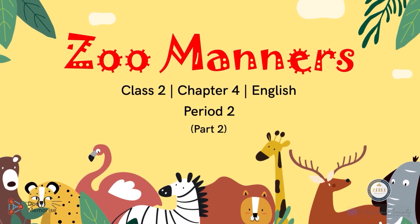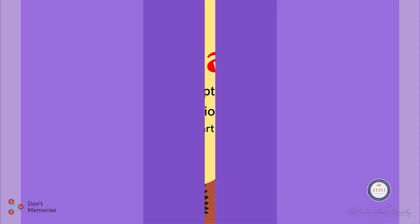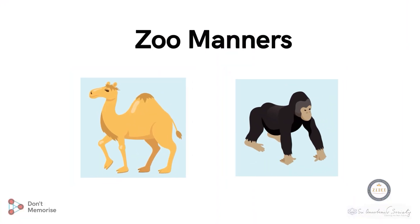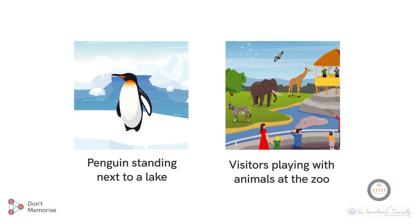In our previous session, we initiated a discussion on the poem by displaying the picture cards of two animals, the camel and the chimpanzee. Now, let's take this discussion forward by displaying the remaining picture cards.